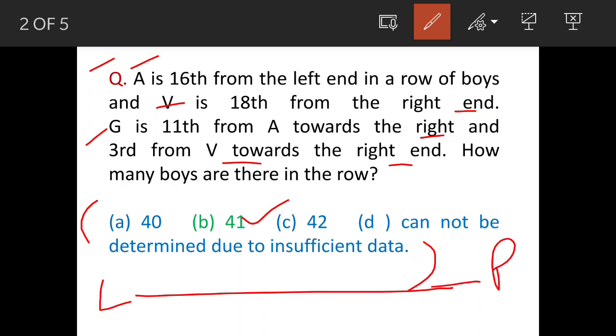This is the left side, this is the right side. A is sitting here, 16th from the left side, and V is here, 18th from the right side. There's another boy right of V, so that is G. These are the input data, and we have to work out the number of boys. Very simple arithmetic, but it is tricky.